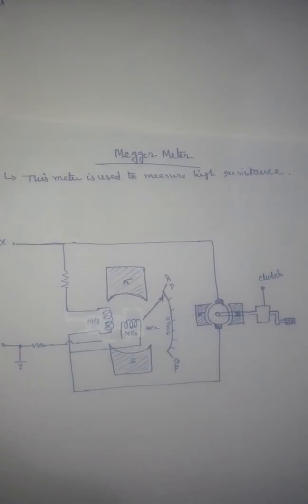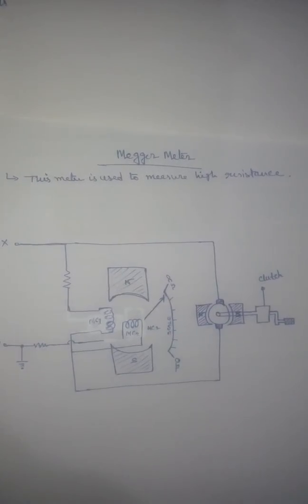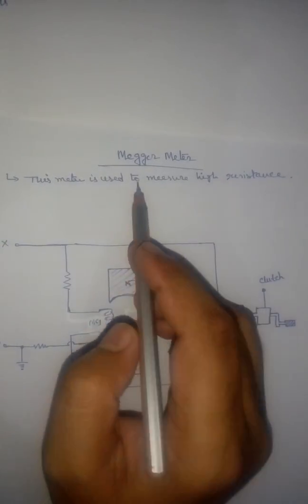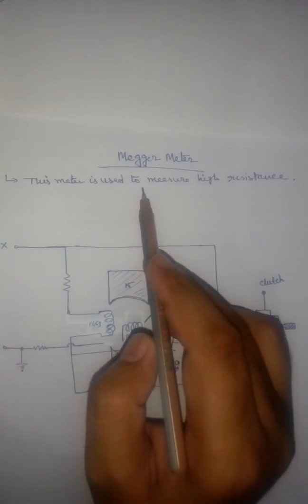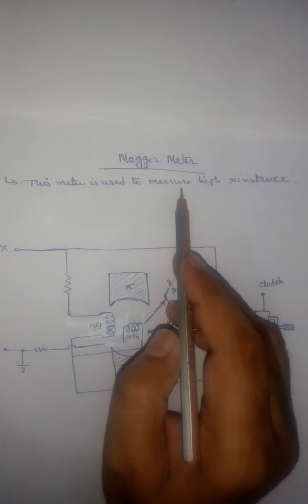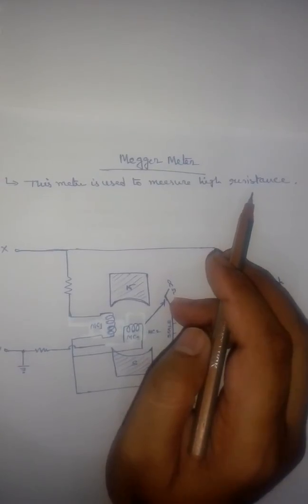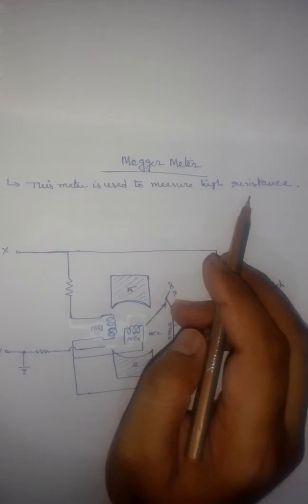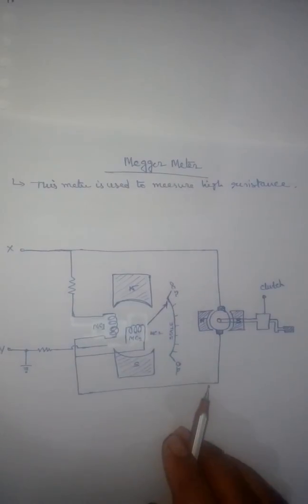Hello students, today I would like to explain and describe the Megger. We all know what a Megger is and what we use it for. Generally, a Megger is used to measure high resistance. High resistance is generally found in insulators or in cables.